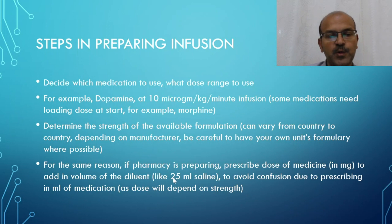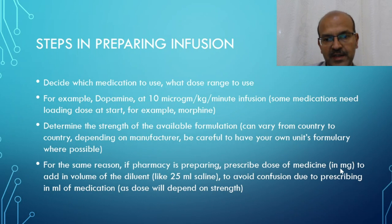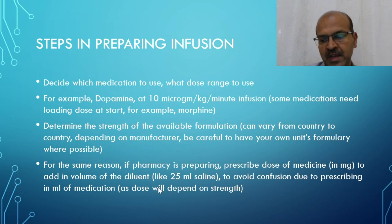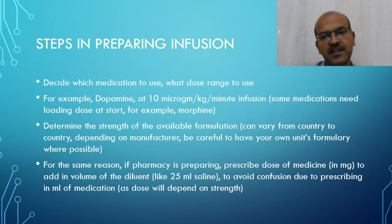You mention the diluent you want to use and the exact milligrams of the drug to add to the diluent to make the infusion. You don't prescribe the mL of dopamine, for example. So if the strength of the formulation is different, you would not be confused by that. This is very important to remember, especially when moving from one unit to another.